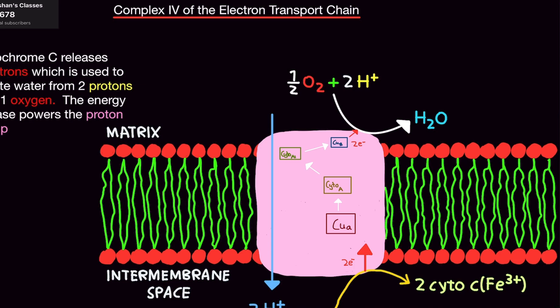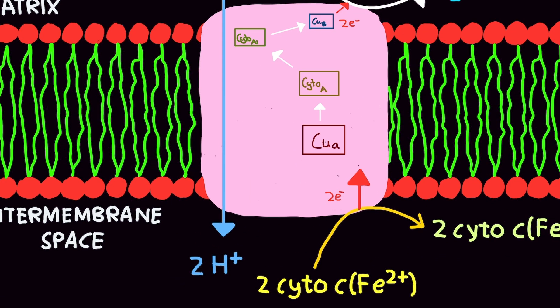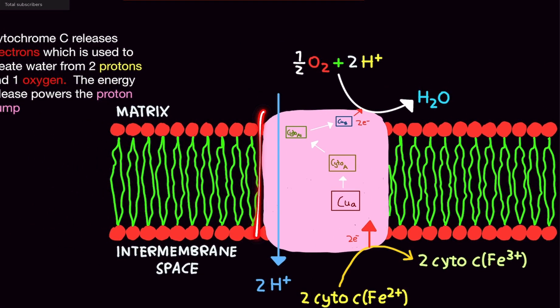Now, what about the proton pump? So when electrons are released from cytochrome C, it basically turbocharges this complex. It basically fills with free energy. And this free energy causes protons to move from the matrix to the intermembrane space. And that is it. Pretty simple, right? So these protons are going to be used for the ATP synthase that's coming up in the next video.